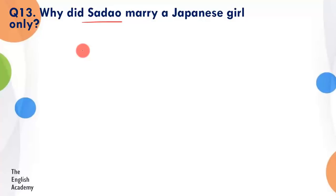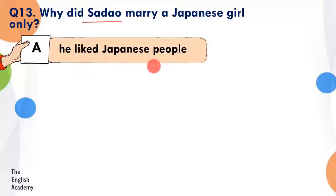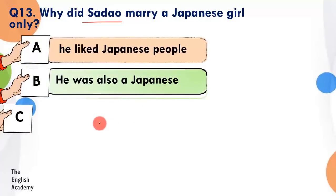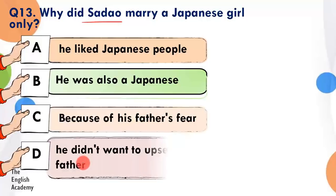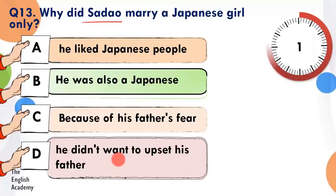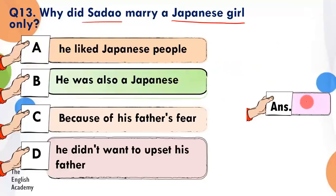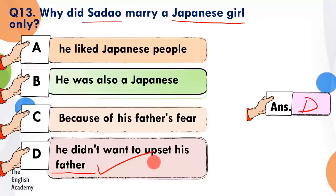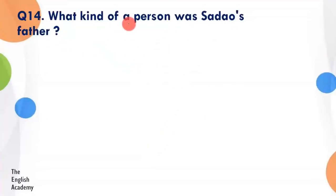Question number 13: Why did Sadao marry a Japanese girl only? Option A: he liked Japanese people. Option B: he was also Japanese. Option C: because of his father's fear. Option D: he didn't want to upset his father. The answer is Option D — woh apne father ko upset nahi karna chahta tha. Uske father chahte the ki woh ek Japanese se shaadi kare, isliye usne Japanese girl se shaadi ki, apne father ka maan rakhne ke liye.